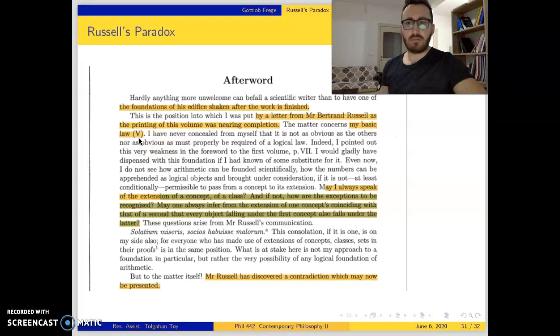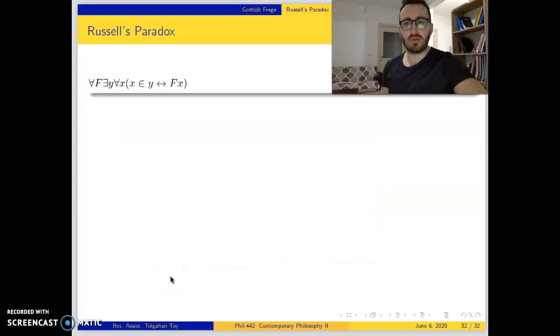In the rest of this part, I will use Edward Zalta's reformulation of the paradox. Since it is not easy to follow Frege's own formulation in his two-dimensional notation, we will use Edward Zalta's formulation.